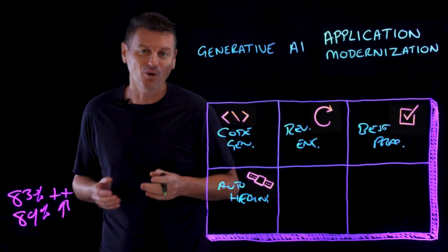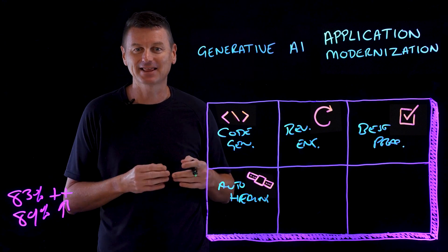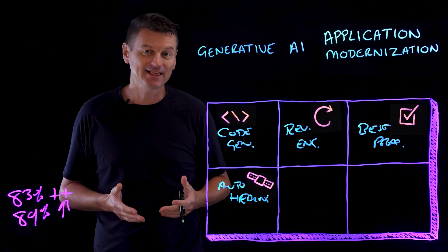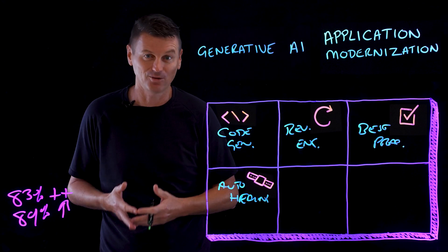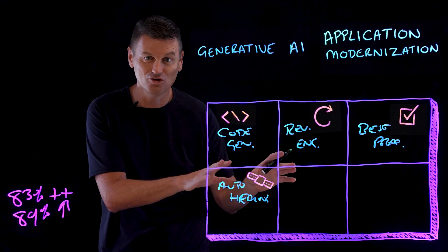Generative AI auto-healing systems can actively monitor the modernized application, identifying and rectifying legacy inefficiencies or issues that arise due to the older code. All right, two more.